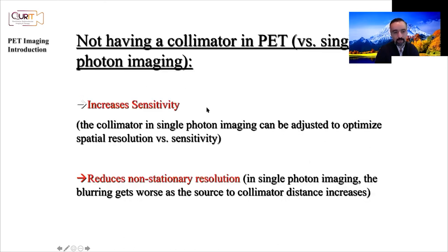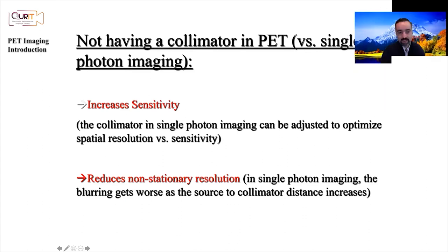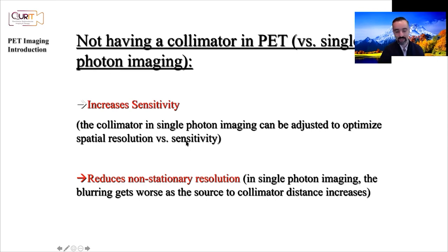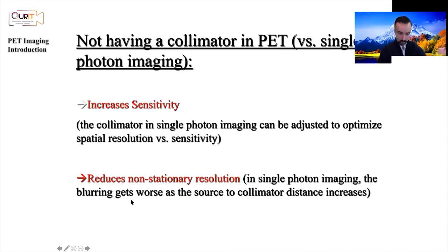Not having a physical collimator in PET versus single-photon imaging results in increased sensitivity. Of course, the collimator in single-photon imaging can be adjusted — for example to improve sensitivity — but when you increase sensitivity, the resolution degrades, or if you try to improve spatial resolution, sensitivity degrades. There's a trade-off. PET provides a very natural way to significantly increase sensitivity, and also reduces non-stationary or depth-dependent resolution, whereas in single-photon imaging, blurring gets worse as source-to-collimator distance increases.